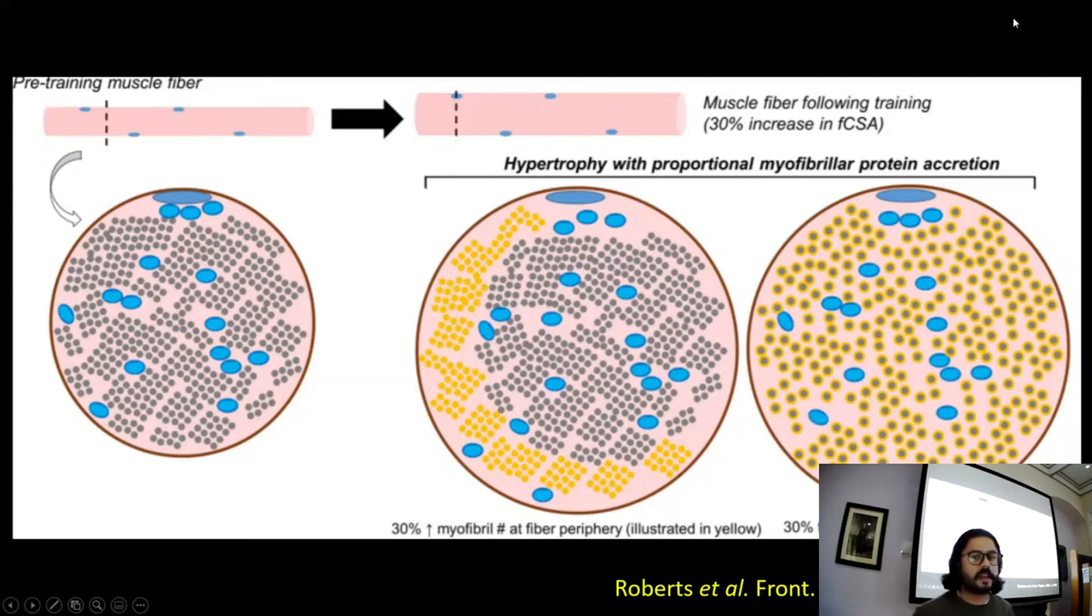So what we can see with this diagram here quite eloquently is an increase in the number of myofibrils and an increase in the size of the existing myofibrils. And that's what contributes to muscle growth.